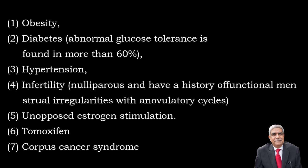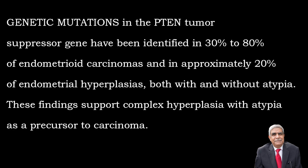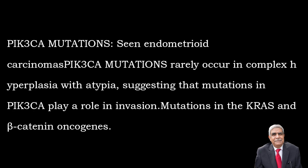Other risk factors include family history, parity, early menarche, late menopause, atypical endometrial hyperplasia, polycystic ovarian disease, and tamoxifen. There is also corpus cancer syndrome, which is associated with diabetes, hypertension, and obesity. Genetic factors including mutations in PTEN, KRAS, and PI3K also play a part in the development of endometrial carcinoma.